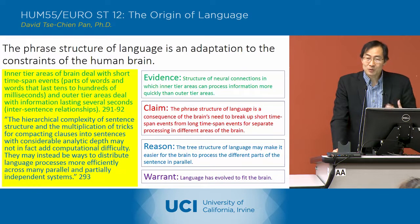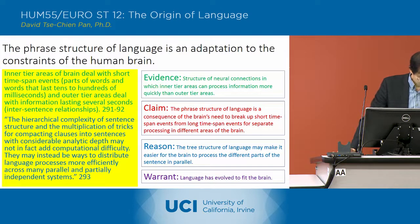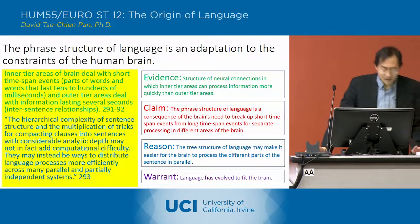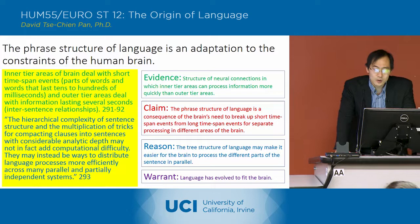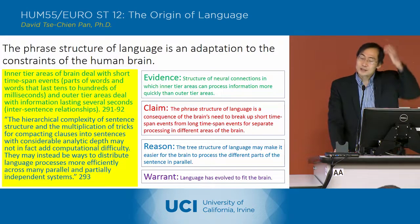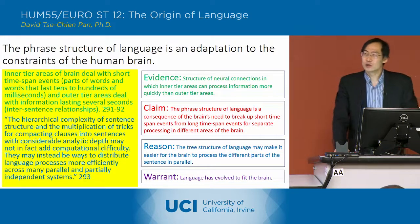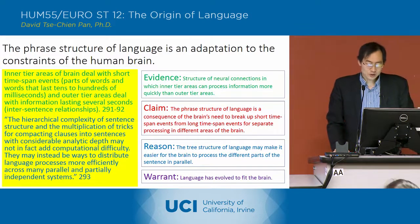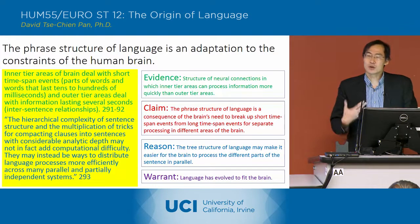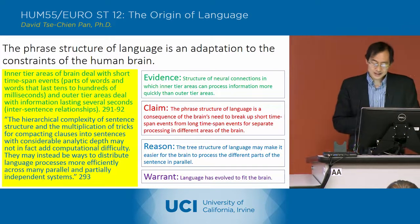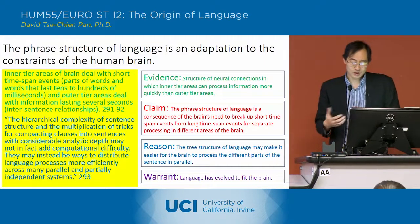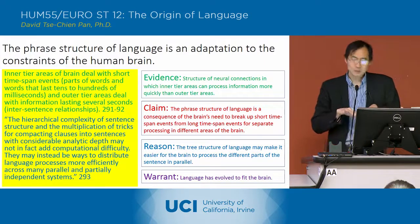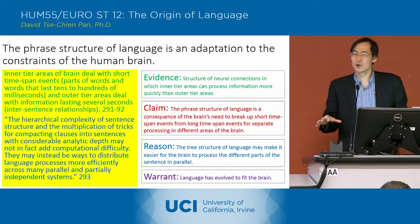Now moving on to what we didn't cover last time. Deacon talks about the way in which the phrase structure of language is adapted to the structure of the brain. He underlines the way in which the brain, in order to function most efficiently, needs to break up short time span events from long time span events so that they can be processed in separate parts of the brain simultaneously.